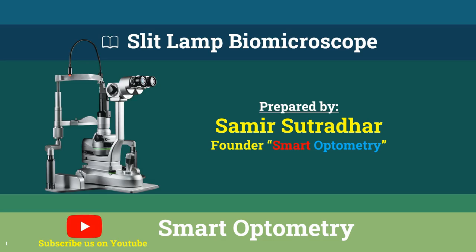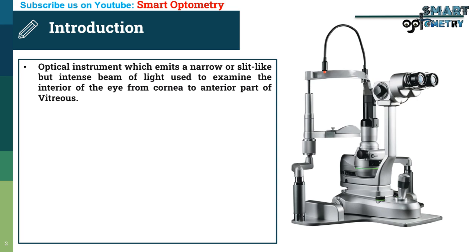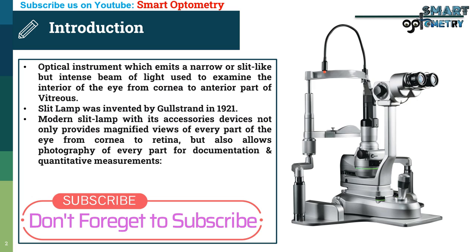Today I will discuss about the Slit Lamp Biomicroscope. A slit lamp is an optical instrument which emits a narrow or slit-like but intense beam of light, used to examine the interior of the eye from the cornea to the anterior part of the vitreous. The slit lamp was invented by Goldstrand in 1921.